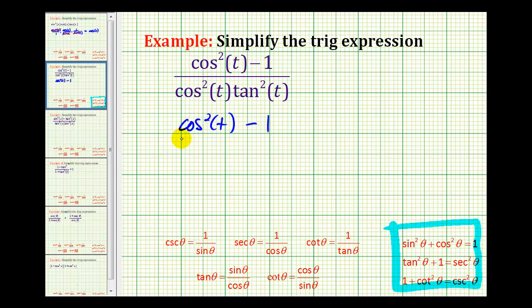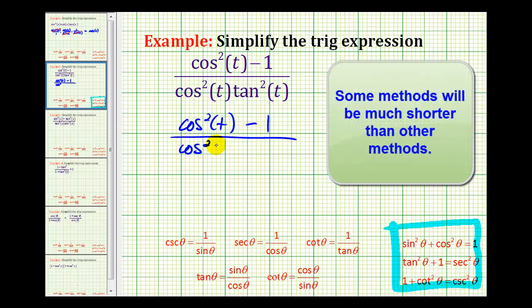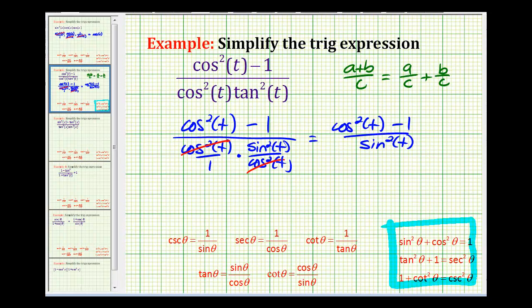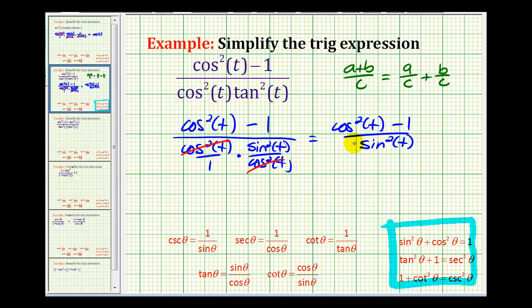And when you're simplifying these expressions, there's often more than one way to simplify them. Now, I'm going to write cosine squared t over one since I know I'm going to write tangent squared t as sine squared t divided by cosine squared t. And notice how two factors of cosine squared simplify out and now we're left with cosine squared t minus one all over sine squared t. Now things are looking a lot better.